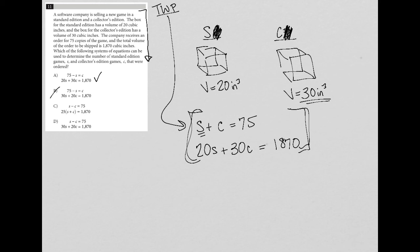And then for choice C, S minus C equals 75. That's definitely not true because it's S plus C equals 75. Choice D also has that S minus C equals 75 equation, which we know is not true. So D is gone. So that just further confirms that choice A is the best answer here.